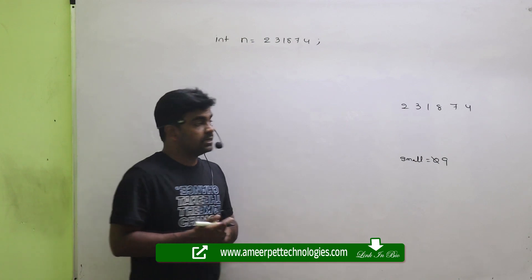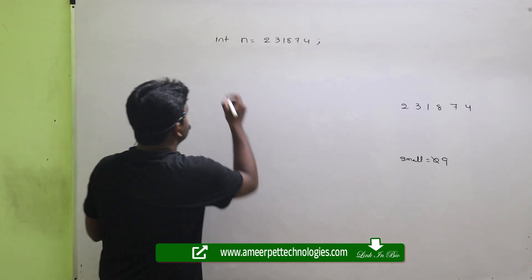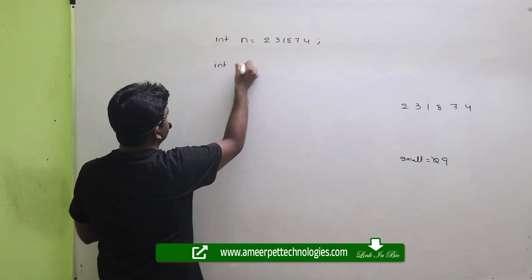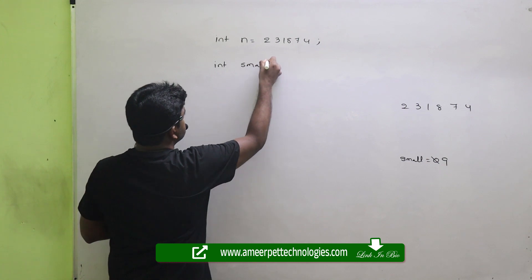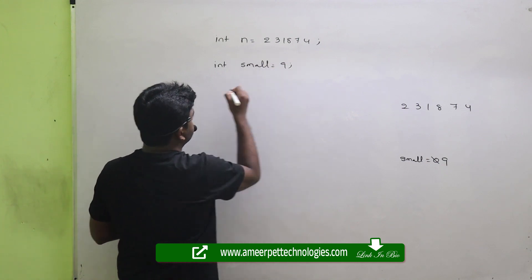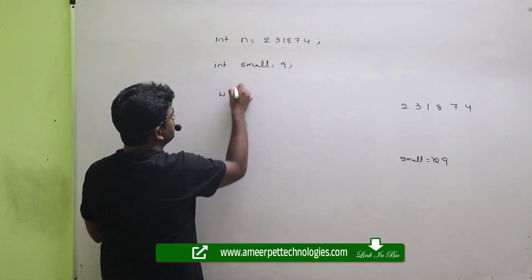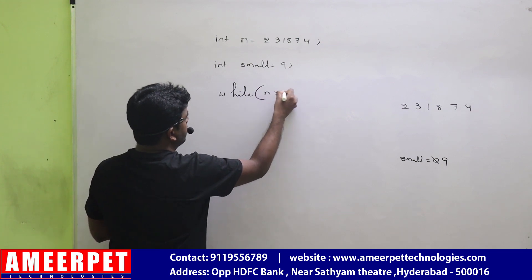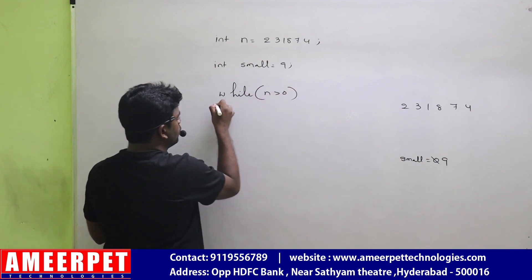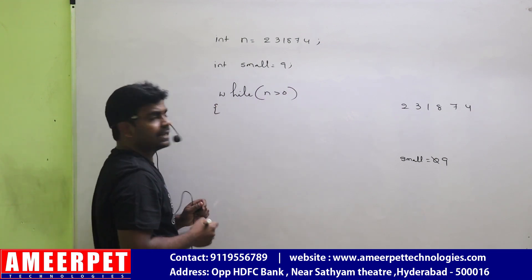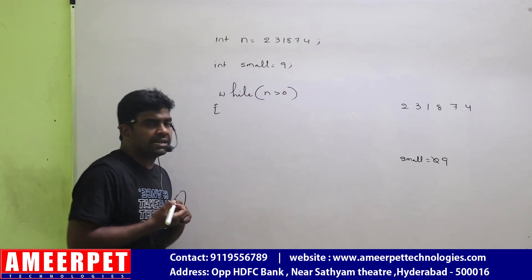So get the highest digit which is available. I am taking that initially the smallest digit is 9. Then start comparing with each digit until the number becomes zero — that is when the loop condition will fail.